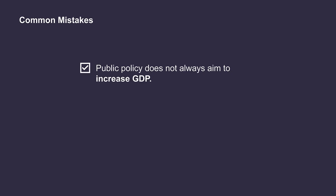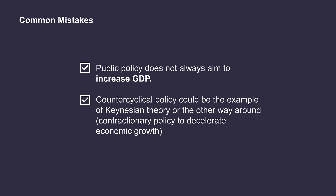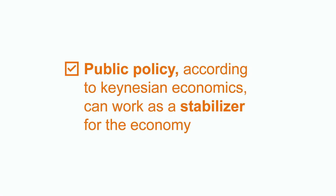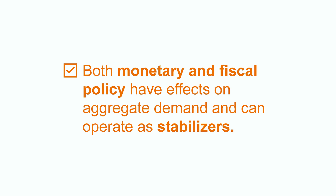Which are the most common mistakes? Public policy does not always aim to equate GDP. Contractionary policy seeks to diminish the effect of inflation. Also, counter-cyclical policy could be the example of Keynesian theory — expansionary policy to offset economic recession — or it can also be the other way around: contractionary policy to decelerate economic growth. This happens mostly in contexts where inflation starts to grow. So, to wrap up, public policy according to Keynesian economics can work as a stabilizer for the economy. Both monetary and fiscal policy have effects on aggregate demand and can operate as stabilizers. So, next time you read the newspaper, analyze news such as 'the Fed increases the interest rate' or 'the government cuts public spending.' Which type of public policy are those? And what are the aims of those policies? Hope you have enjoyed this video, and if you want to learn more about the topic, feel free to explore further.